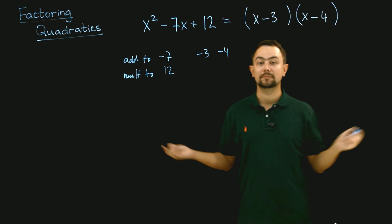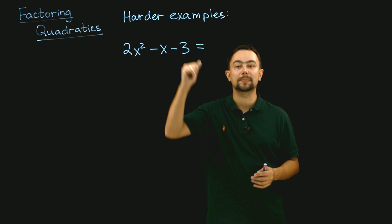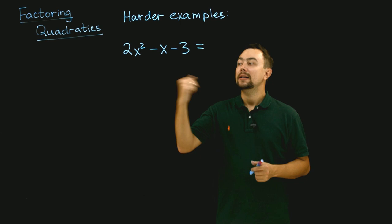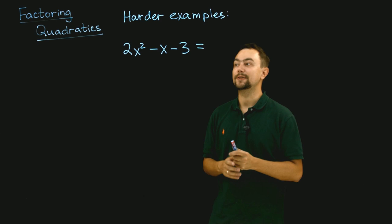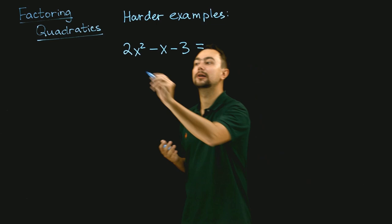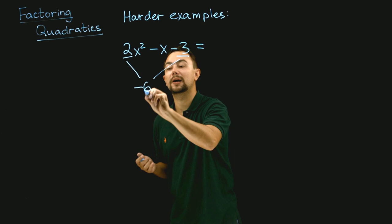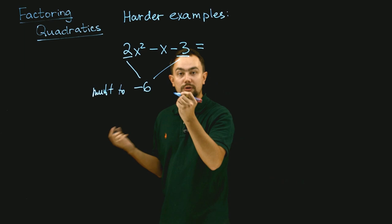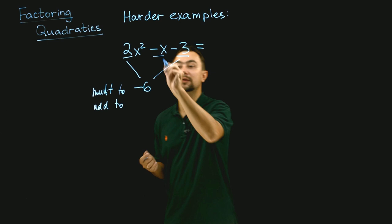Let's look at some harder examples: 2x squared minus x minus 3. In this case, the first coefficient is not 1 — it's 2x squared. So we work similarly, but a little differently. We need two numbers that multiply to 2 times negative 3, which is negative 6.